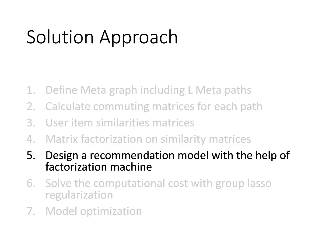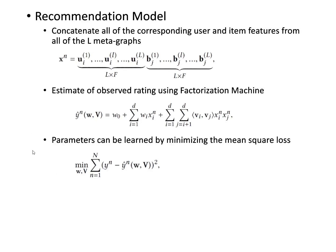The fifth step is designing a recommendation model using a factorization machine. The model concatenates all corresponding user and item features from all l metagraphs, then estimates observed ratings using the factorization machine equation. The parameters are learned by minimizing the mean square loss.